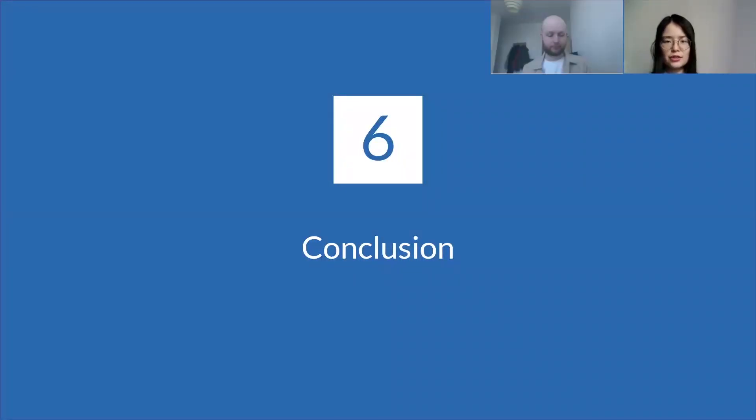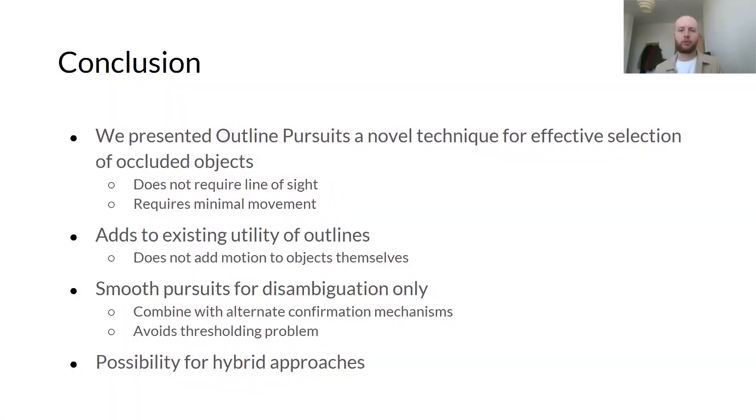Now back to Ludwig for the conclusion. So to wrap up our talk, we presented Outline Pursuits, which is a novel technique for effective selection of occluded objects in virtual reality. Outline Pursuits does not require line of sight and requires minimal body movements for selection, making it ideal in situations with restricted movements. By adding to the already existing utility of outlines, objects can be selected without changing their properties. We demonstrate how combining smooth pursuits for disambiguation with other modalities for confirmation reduces the parameter search space and risk of accidental activations, whilst providing more opportunities for the provision of feedback. Our results show the compelling advantages of Outline Pursuits for highly occluded targets, which opens up further possibilities of combining the techniques with alternative selection techniques to allow efficient selection at all levels of occlusion.